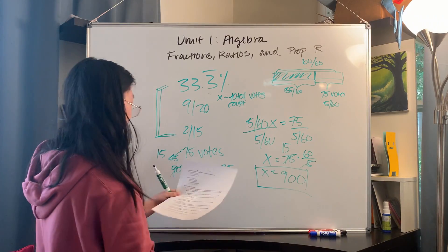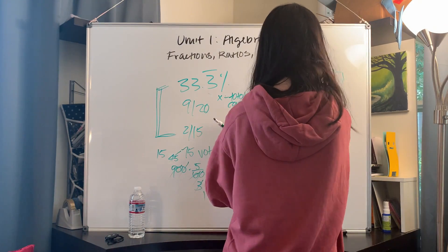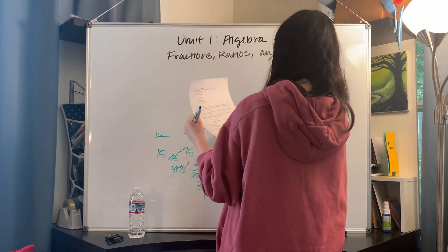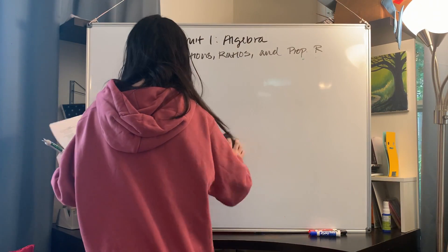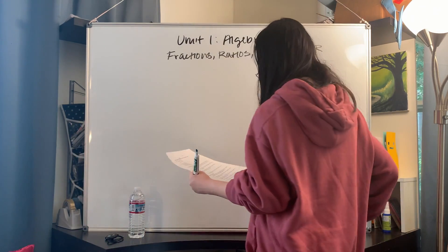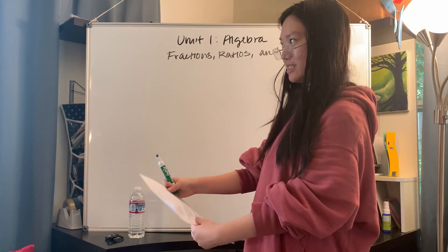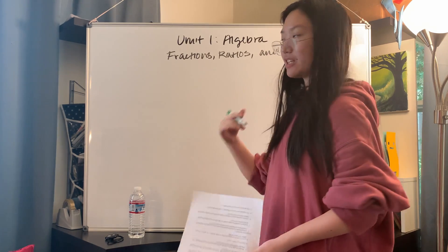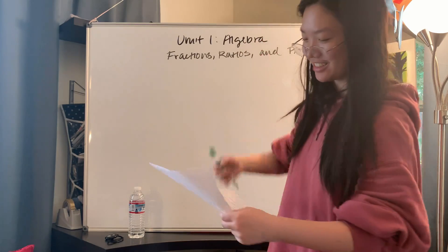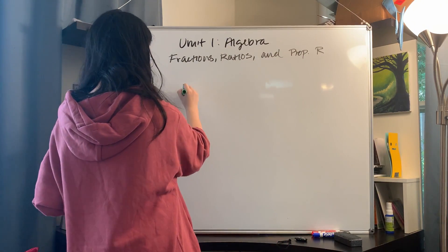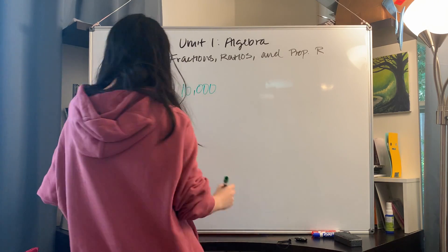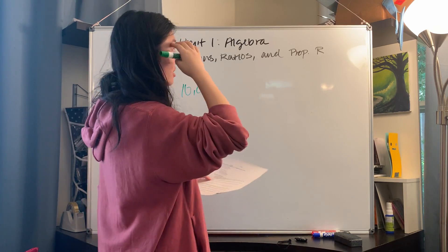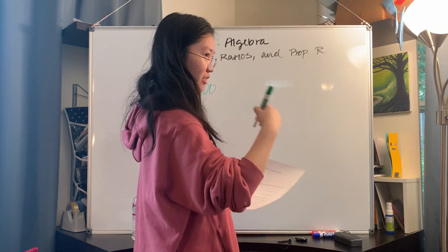Problem 2: the price of a car is originally $10,000. If the price is decreased by 25% then increased by 25%, what is the resulting price? This is a common mistake students make — the answer is not $10,000, even though that may be your instinctual answer. First, we start with $10,000, and then with a 25% discount, the new price would be 75% of the original price.